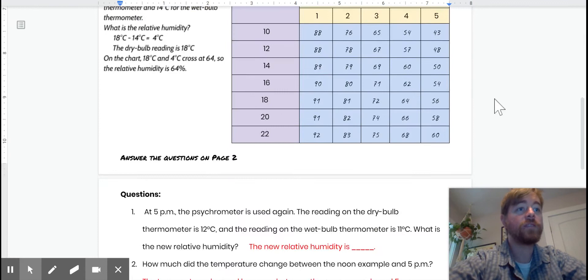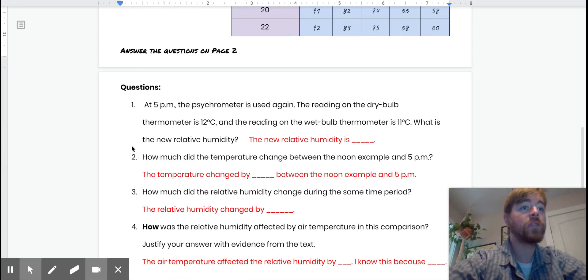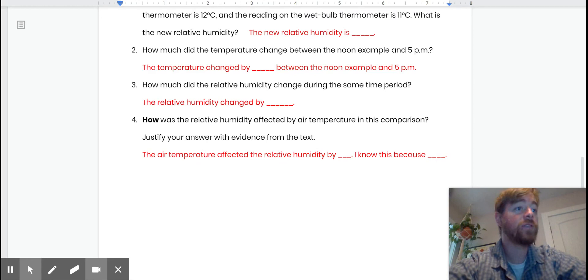Question two, how much did the temperature change between the noon example and 5 PM? Go back to the example. Remember that the actual air temperature is the dry bulb and look at our new dry bulb temperature. We'll need some subtraction. Question three, how much did the relative humidity change during the same period? Now we're not looking at dry bulb or wet bulb, we're actually looking at the percent relative humidity. How much did that change? Subtraction once more.